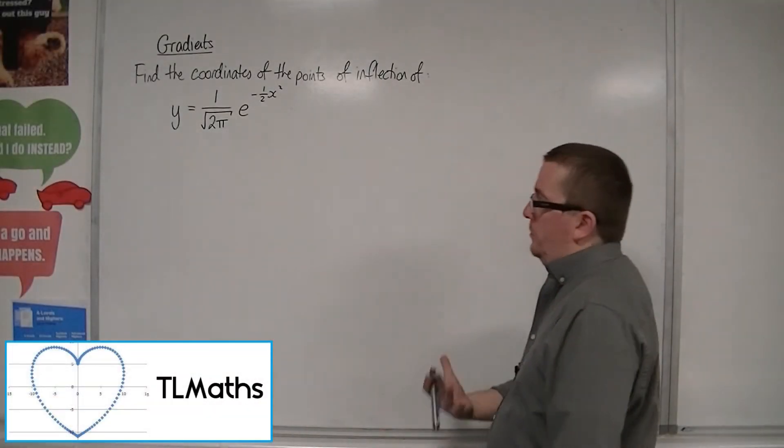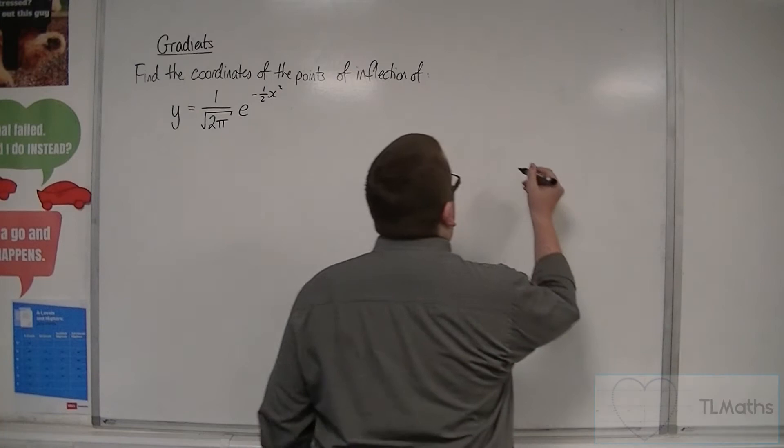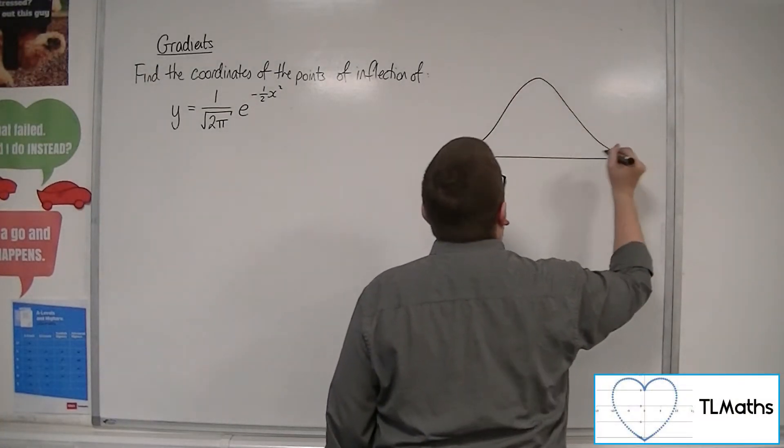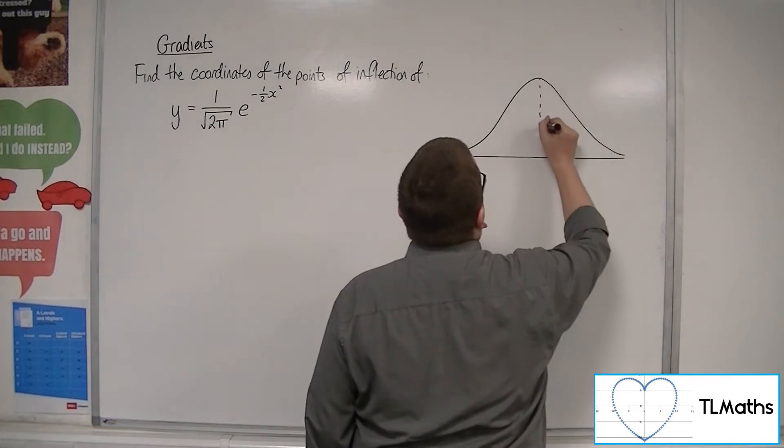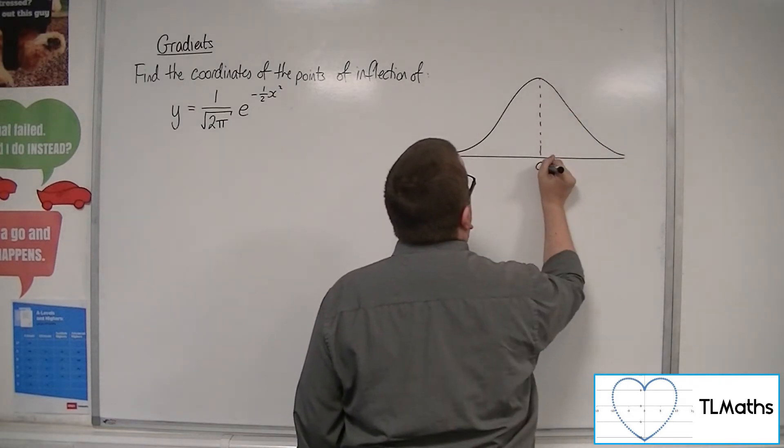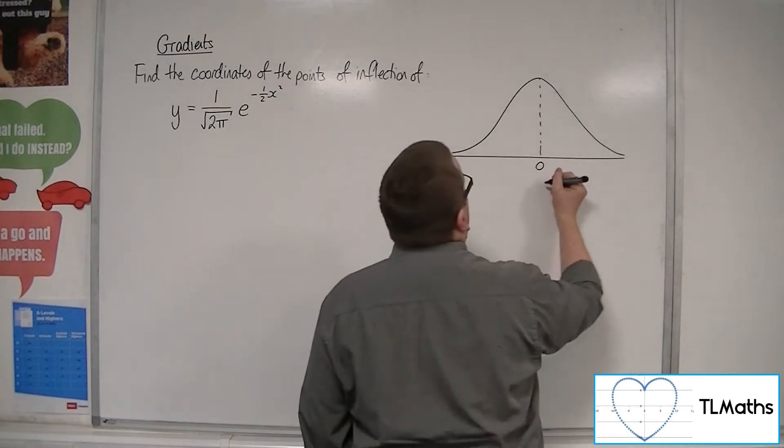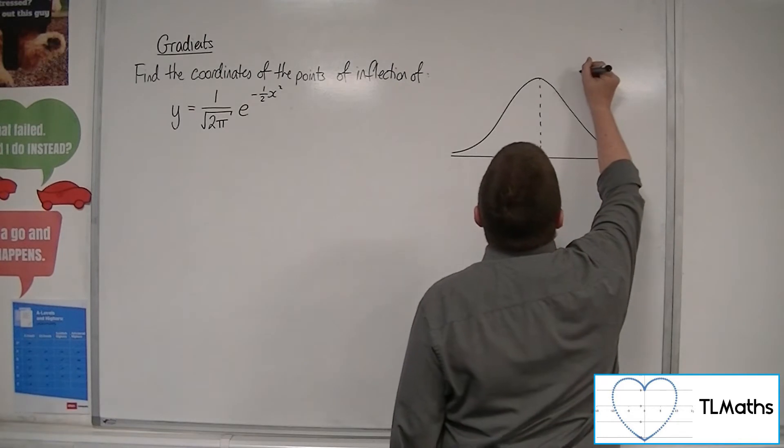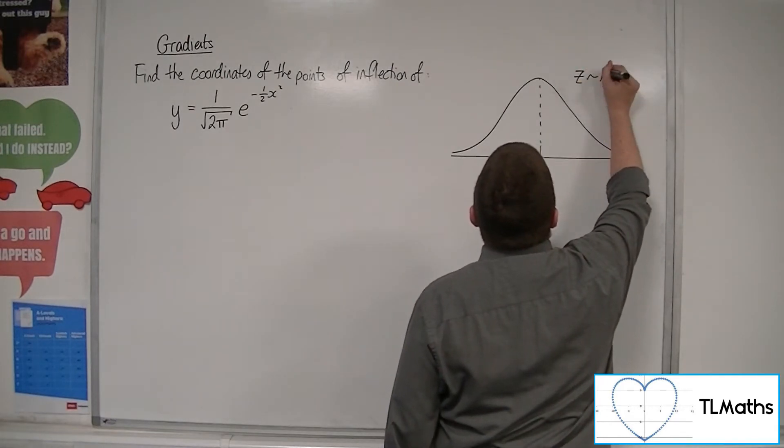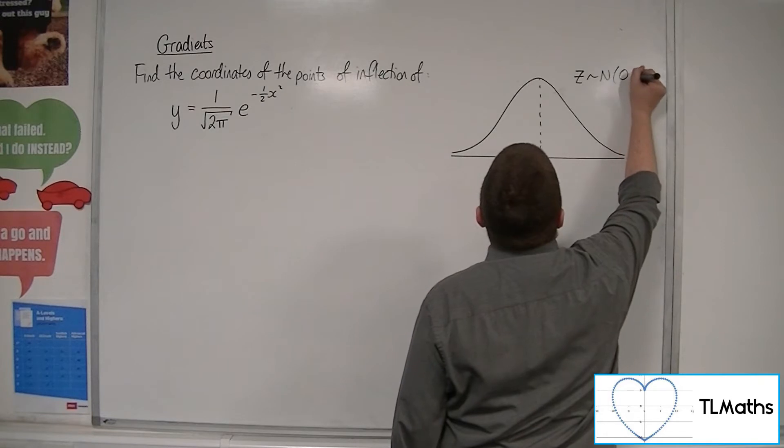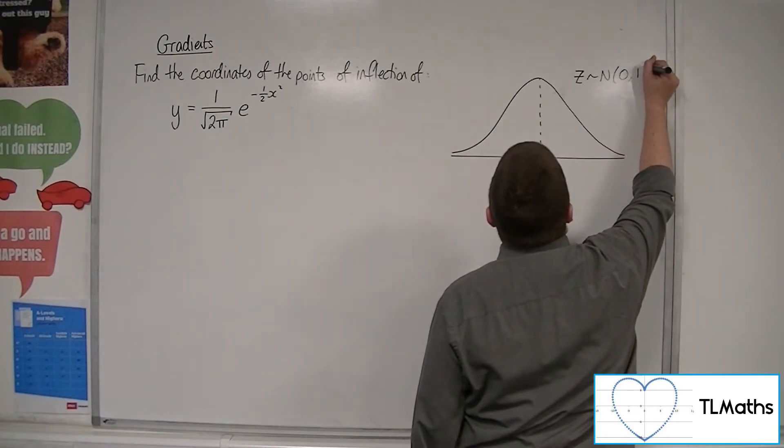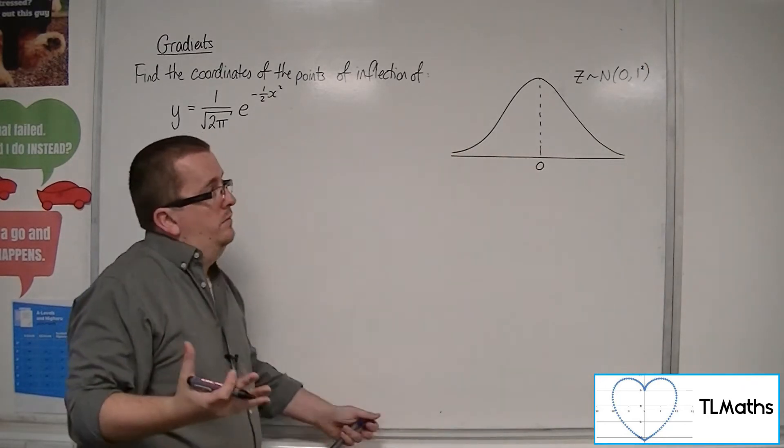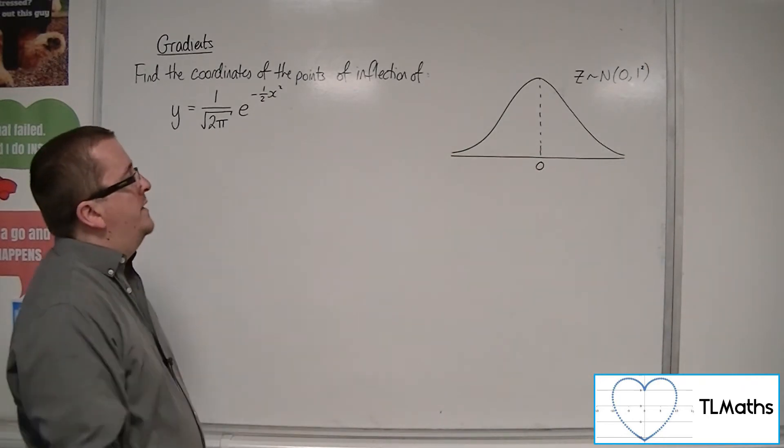The standard normal distribution is a bell curve where the mean, dead center, is 0, and we have a standard deviation of 1. So we say that z is normally distributed with a mean of 0 and a variance of 1, or a standard deviation of 1 with a variance of 1 squared, however you prefer to write it.